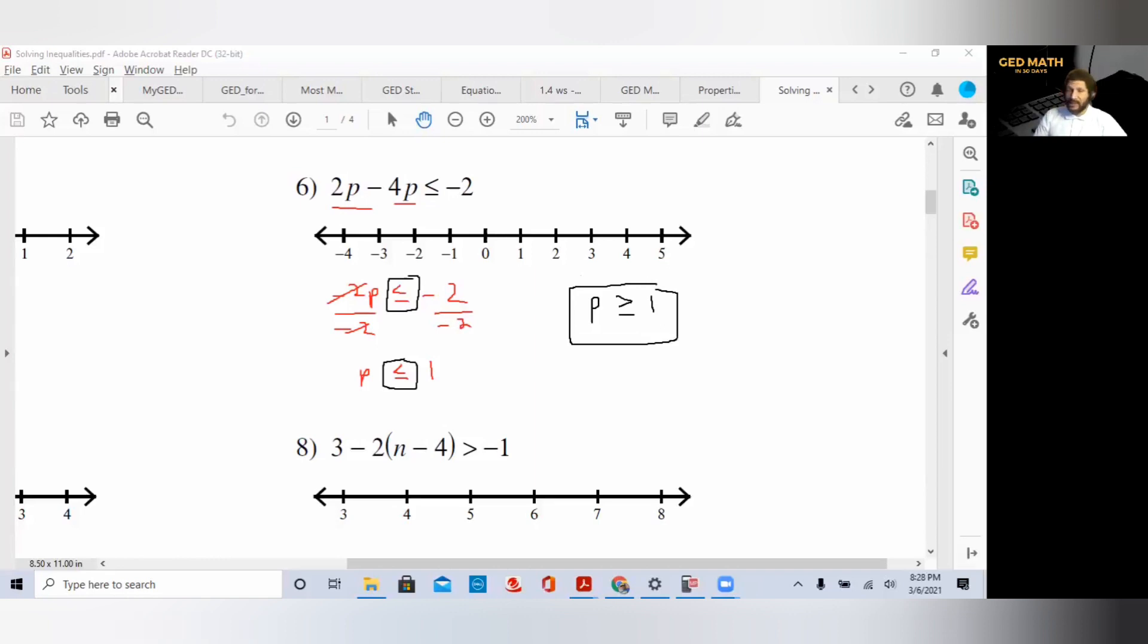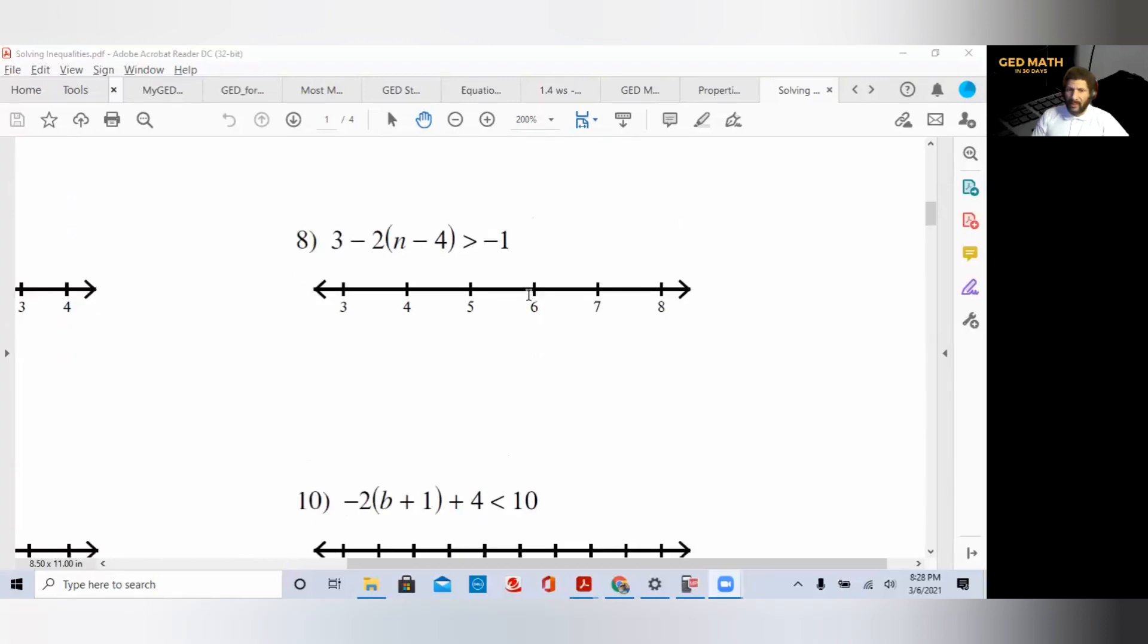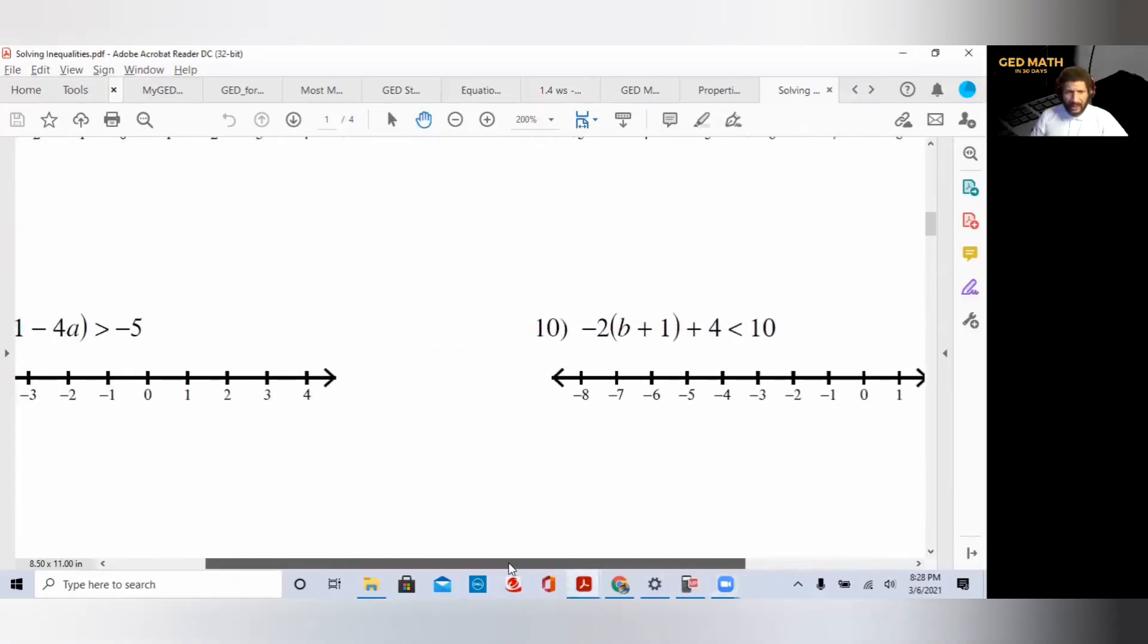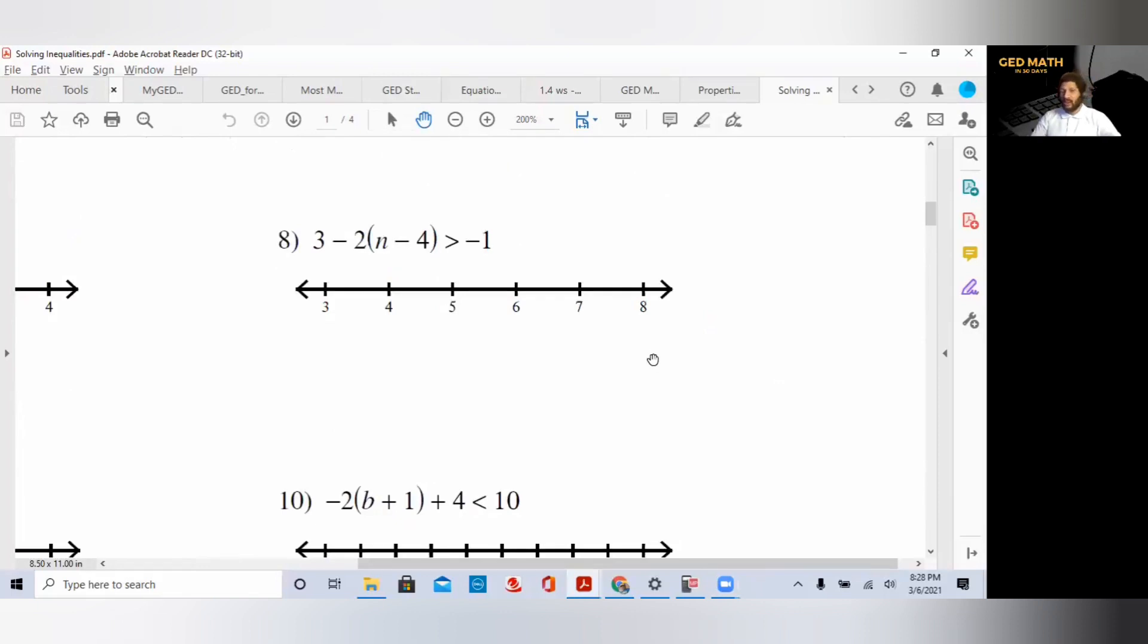Because it's greater than or equal to, we would have a solid circle at 1 and then an arrow to the right. That is example number 2. Let's look at number 8. This is going to be the final inequality I'm going to do. Sometimes they will have terms on both sides.